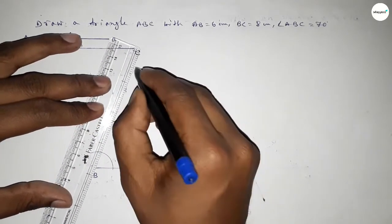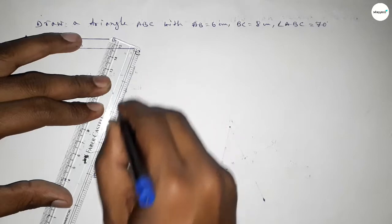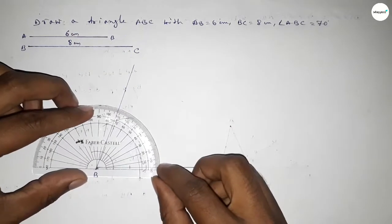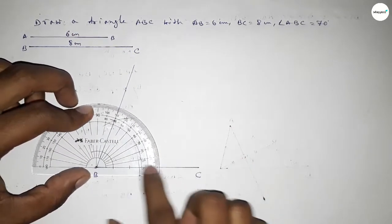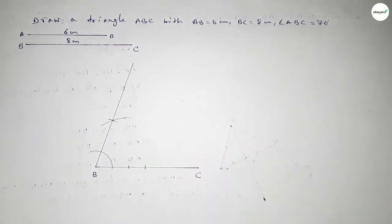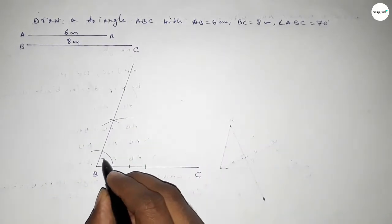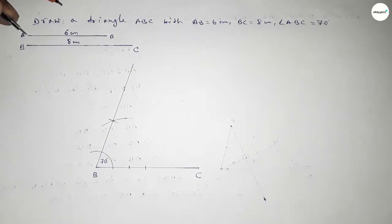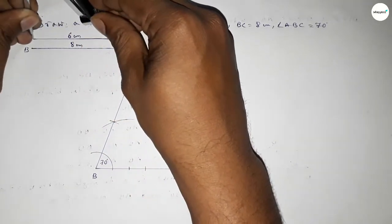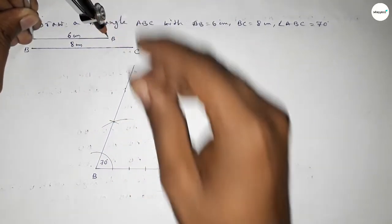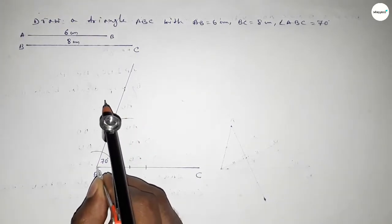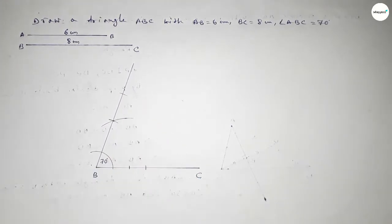Joining this point to B to get a 70-degree angle. Now checking whether it is 70 degrees or not — yes, this is perfectly 70 degrees. Now taking the length AB equal to 6 centimeters using a compass and putting the compass on point B.